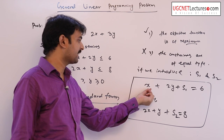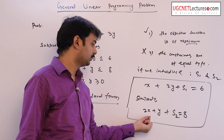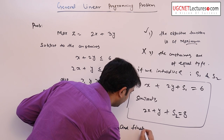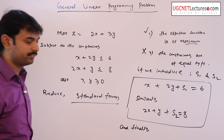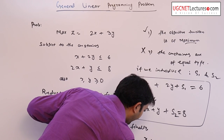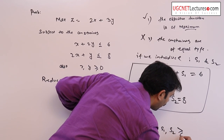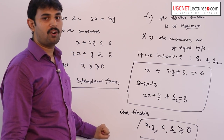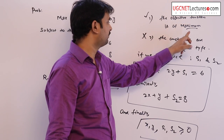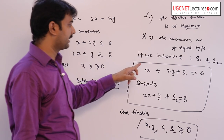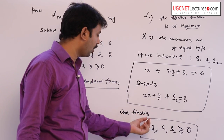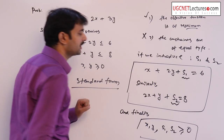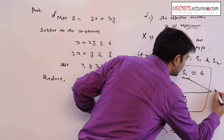We can write x plus 2y plus s1 equal to 6, and 2x plus y plus s2 equal to 8. Finally, x, y, s1, and s2 are all non-negative, so all criteria of standard form are satisfied: the objective function is of maximization type, the constraints are of equality type, and all decision variables are non-negative. These real numbers s1 and s2 are called slack variables.